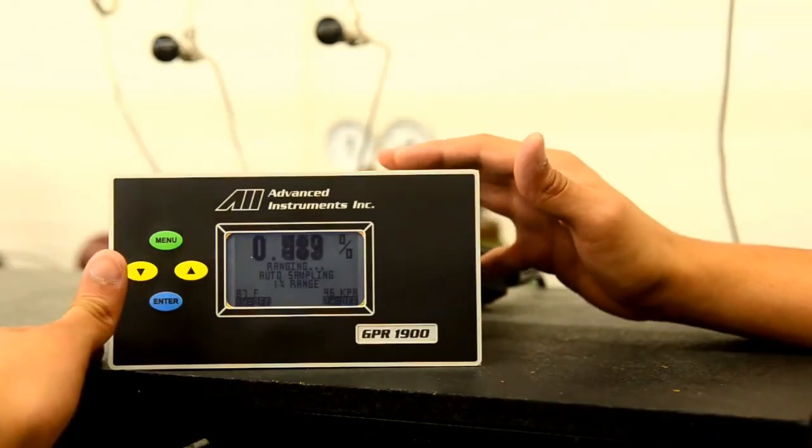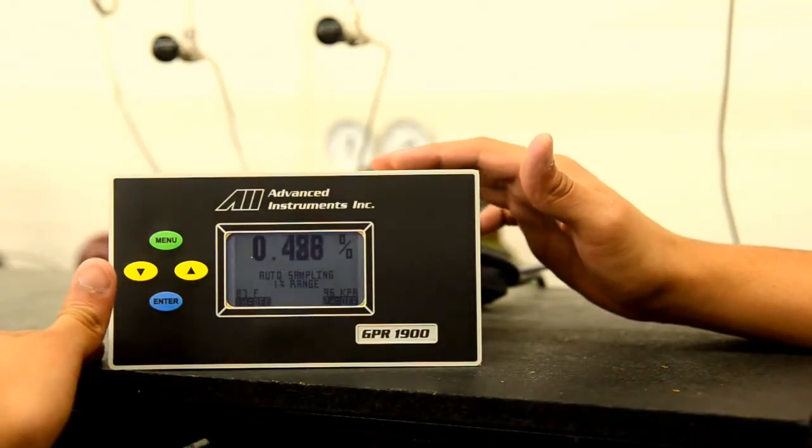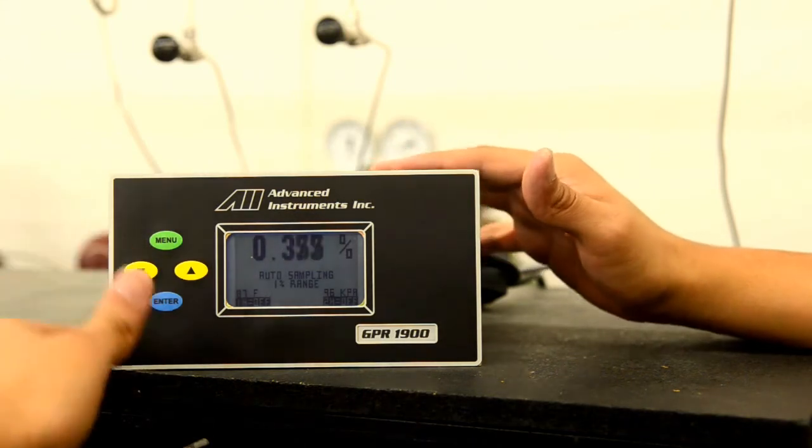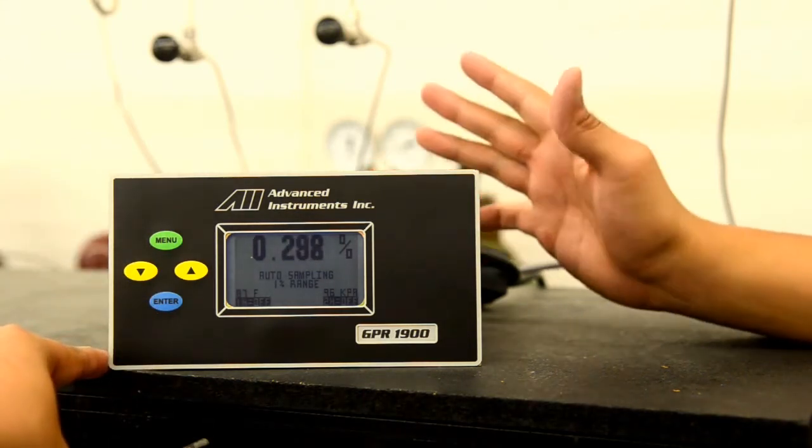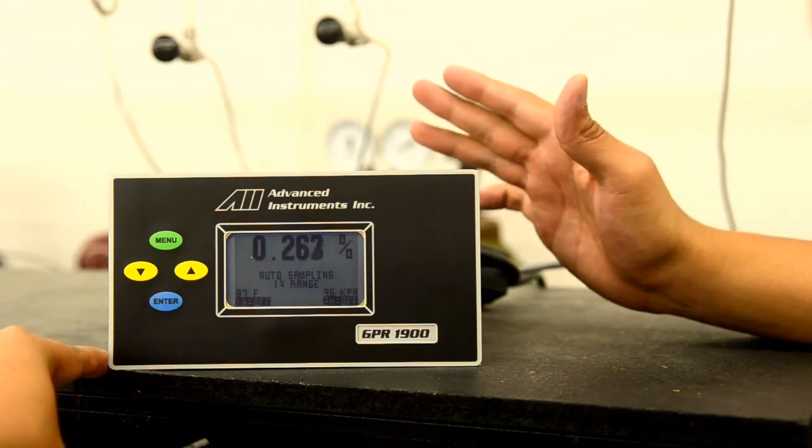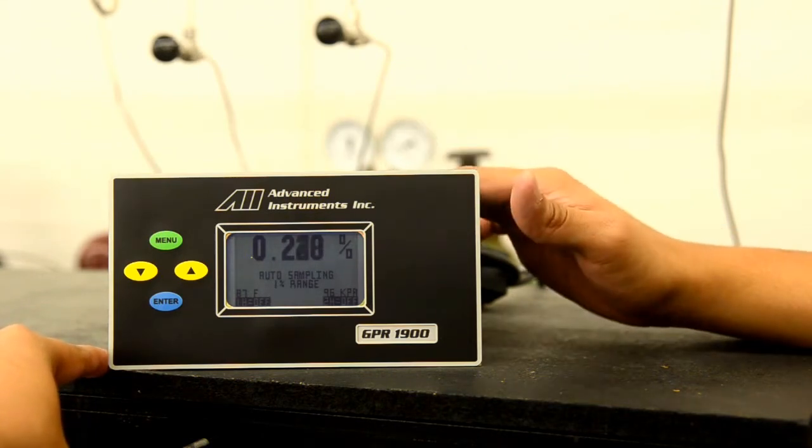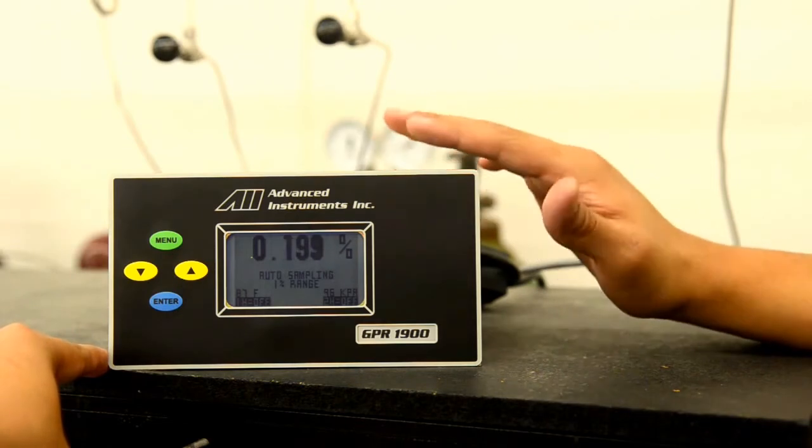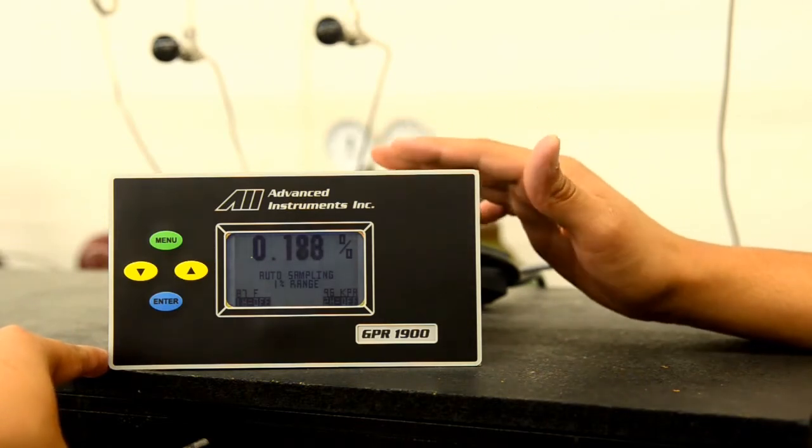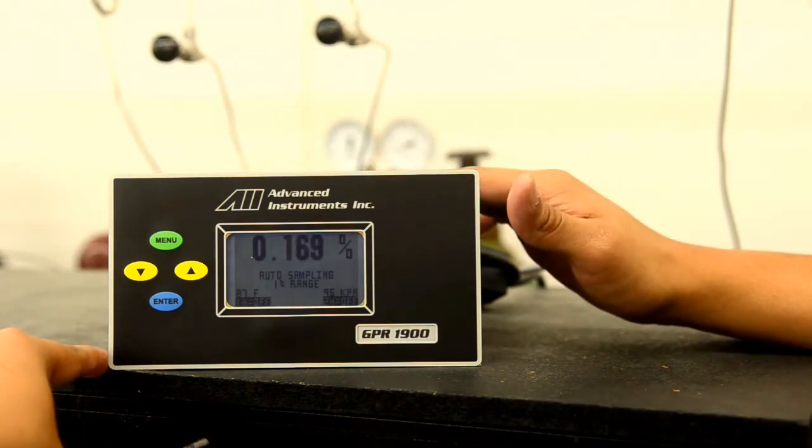As you can see, the sensor is responding to the zero gas and coming down relatively quickly. This process to come below 10 parts per million can take anywhere from 30 minutes to 1 hour, depending on the length of time the oxygen sensor has been exposed to ambient air, which we recommend a time no longer than 3 minutes, and also the quality of the gas along with the flow of the gas across the sensor head.